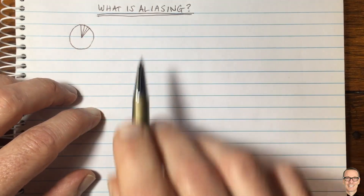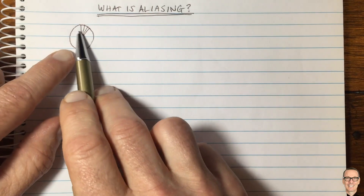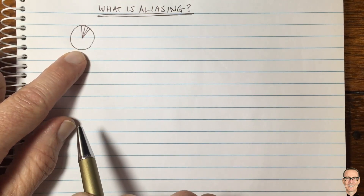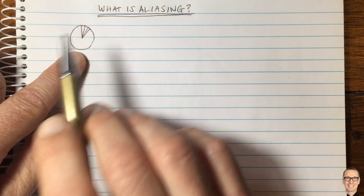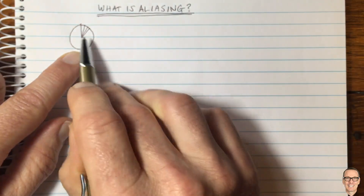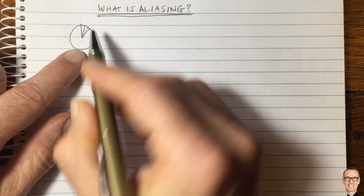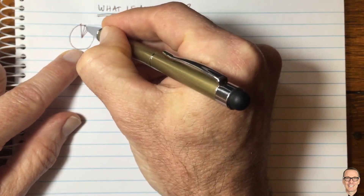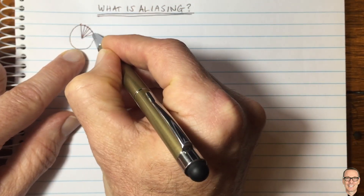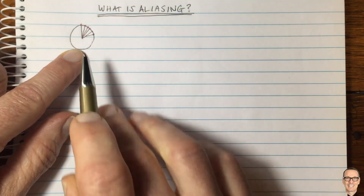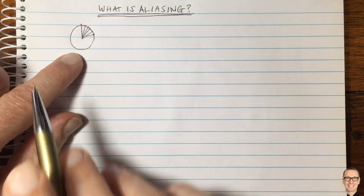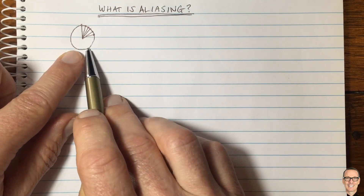So what is aliasing in sampling? I like to think of a wheel turning and we're taking a video of the wheel. The frames in that video are the samples. We mark a point on the wheel, and as it rotates, each frame that point will have moved. If we're taking lots of frames during the time it takes the wheel to go around one circle, then the picture will look like this.